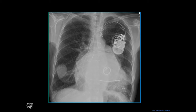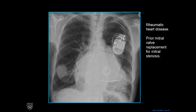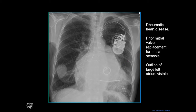Here's a new chest x-ray — this one is not normal. This patient had rheumatic heart disease, which gives you an autoimmune reaction to your cardiac valves. She had a prior mitral valve replacement for mitral stenosis. This metal thing is a mitral valve — the valve between the left atrium and the left ventricle — which has been replaced and it's mechanical. In this case, you can see the outline of the left atrium, which is not normal because this left atrium is very big.